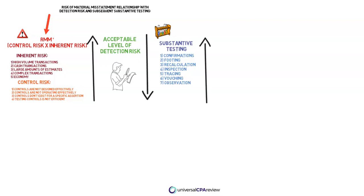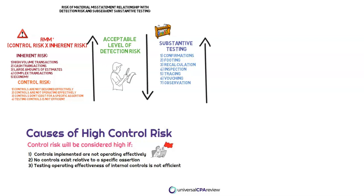You can see why inherent risk would be higher, but when it comes to control risk, it really addresses the control environment, as well as how well the company designs their controls and whether they're operating effectively. So if they're not doing either one of those, control risk is going to be much higher, which means as an audit team, we can't rely on the controls the company has implemented to detect or correct any material misstatements.